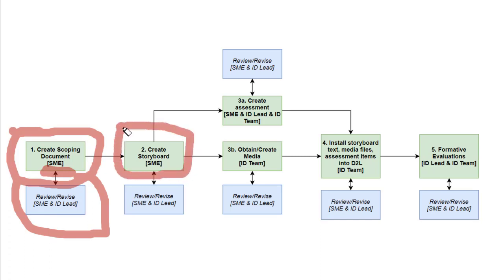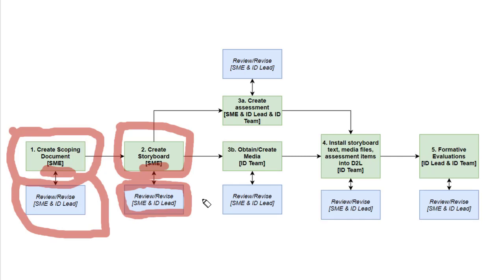The second step in the process is taking the approved scoping document and then creating the storyboard — that's something the subject matter expert does. Once these storyboards are created, they are reviewed and revised by the ID lead or anybody on the ID team, as well as the subject matter expert. This is a very important step because most of the content and specific media elements for each module within the micro-credentials are identified and clearly delineated here.